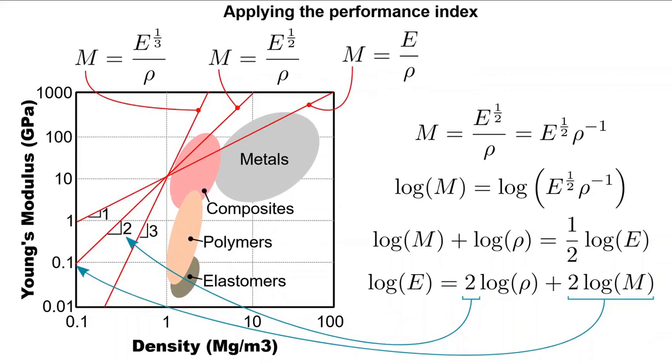This is how one applies the performance index. You can see that for a given density, say 1 megagram per cubic meter, and a given modulus, there are no materials that are suitable for a given application. For a tie, one needs to increase the density by a certain amount before suitable materials are available, and similar conclusions can be drawn for the other component configurations and their respective performance index.